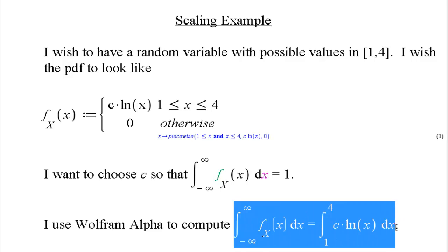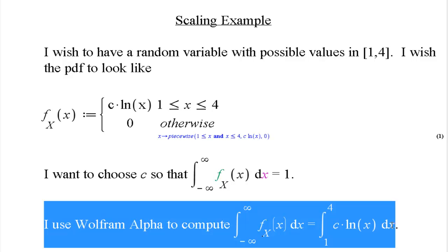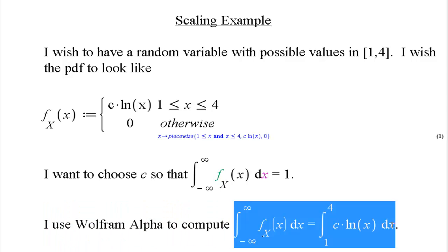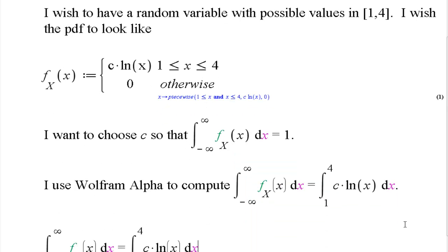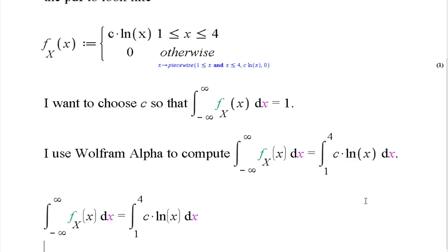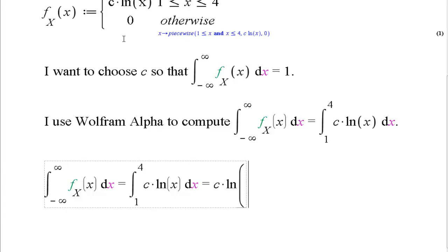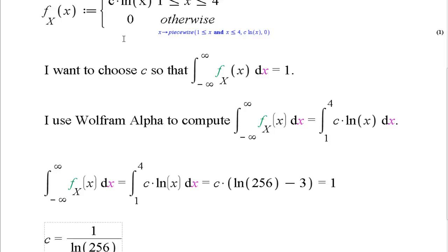I know that this integral is c times the natural log of 256 minus 3. If I want that to equal 1, then what does that tell me about c? It tells me exactly what c should equal. I should let c equal 1 divided by the natural log of 256 minus 3.